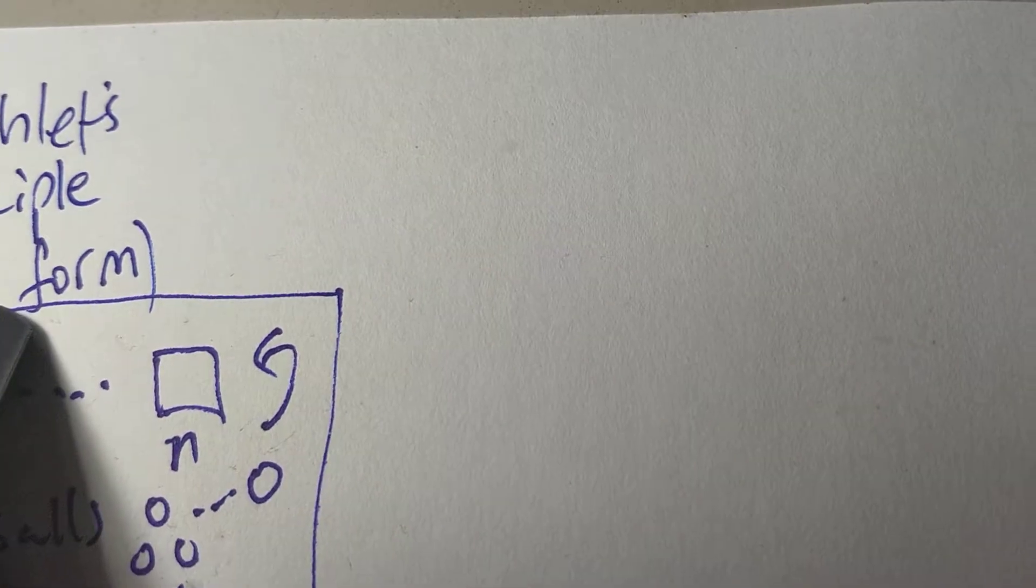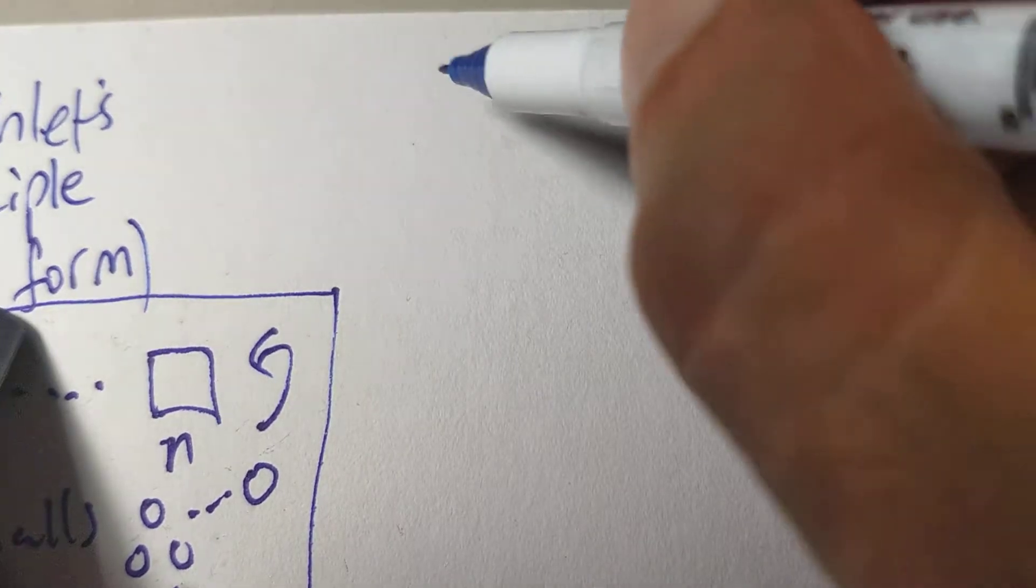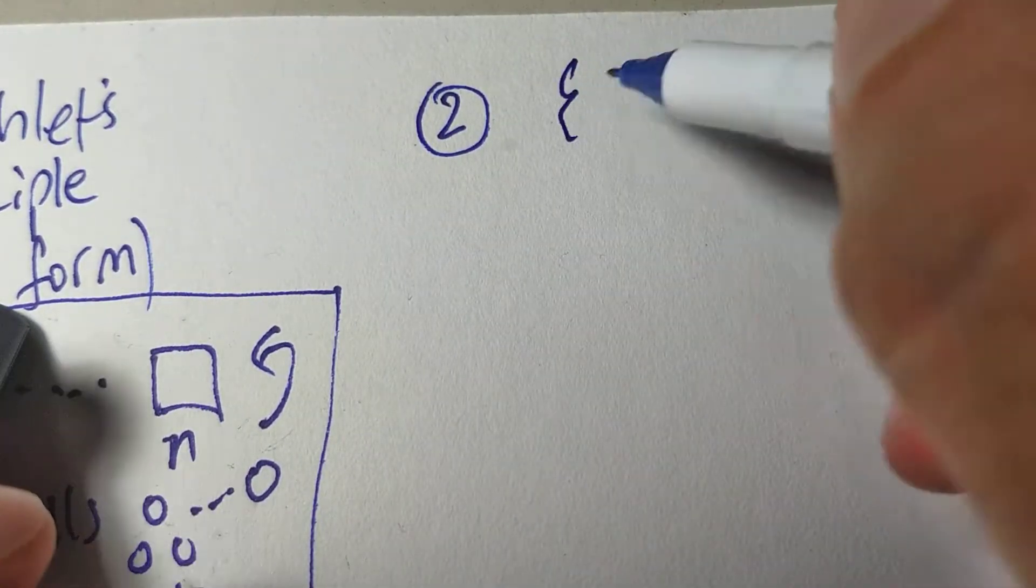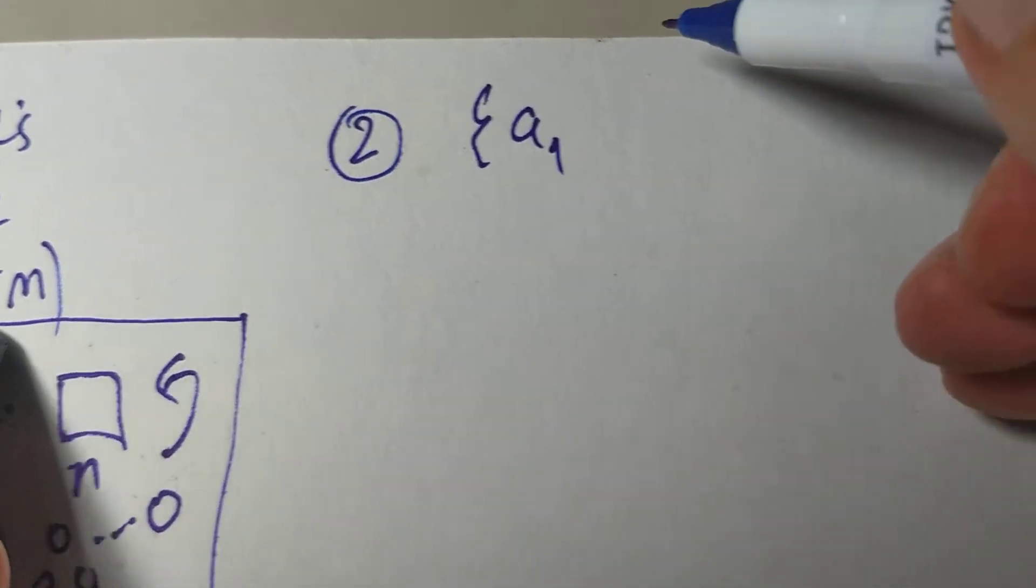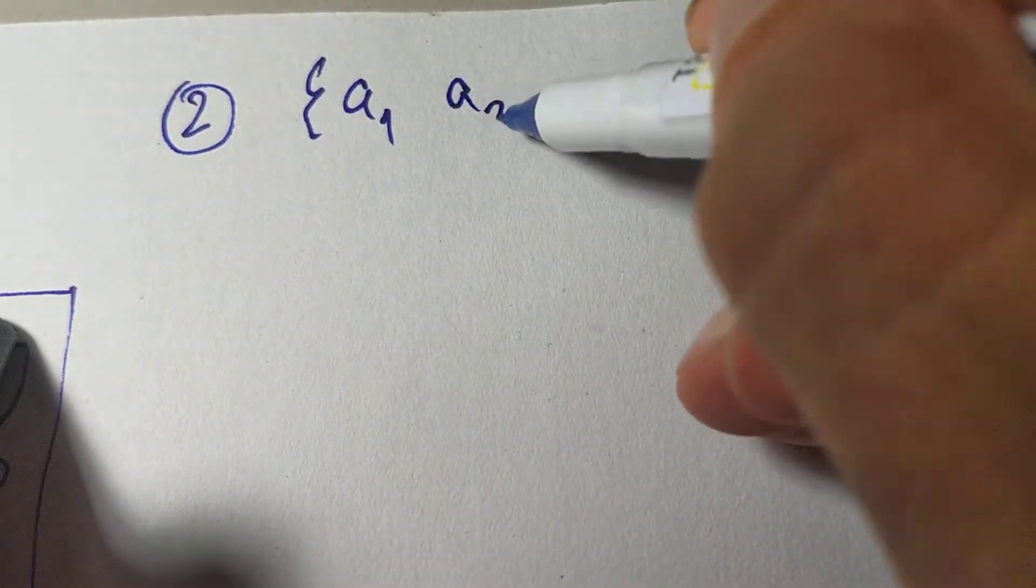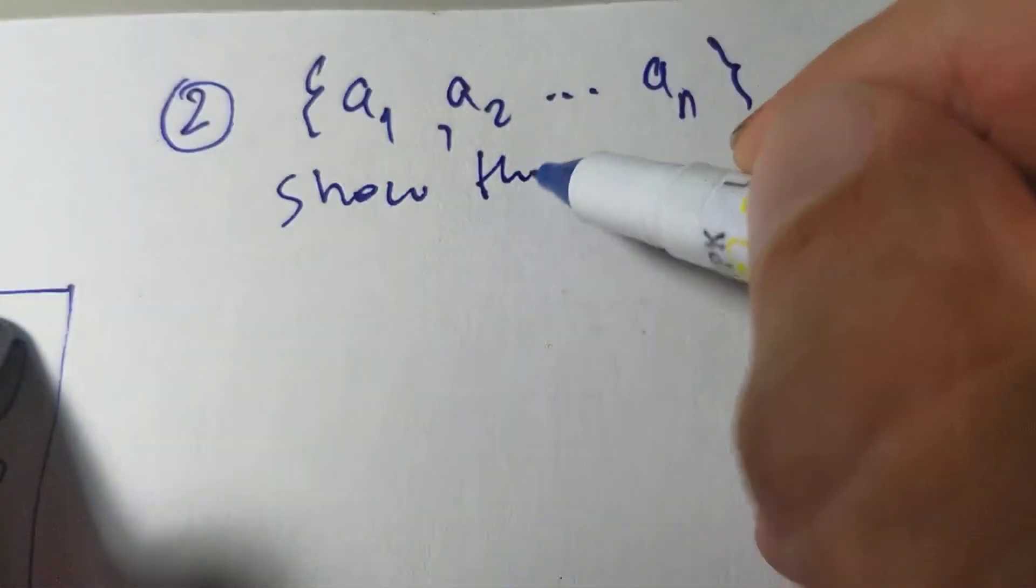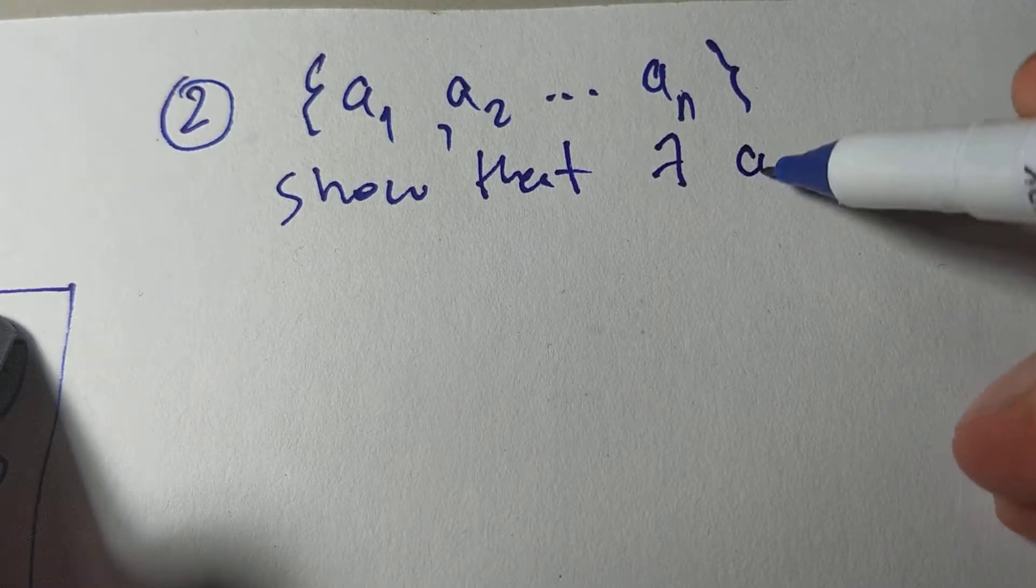Okay, let's try to do another one. I think we have time for another one. Problem two. I have a set of elements A1, A2, up to A, and I have N of them now.